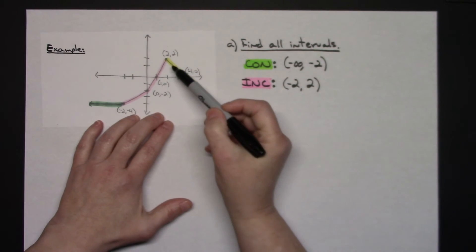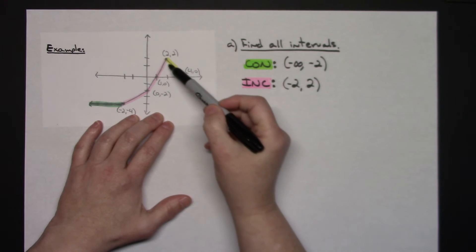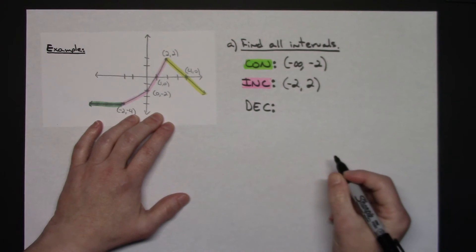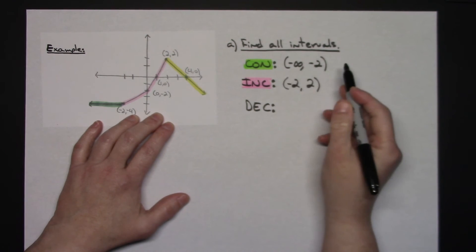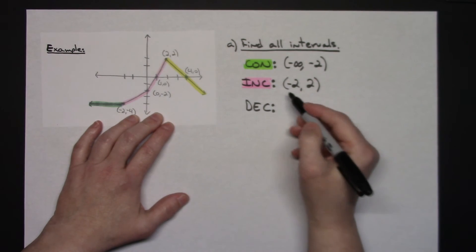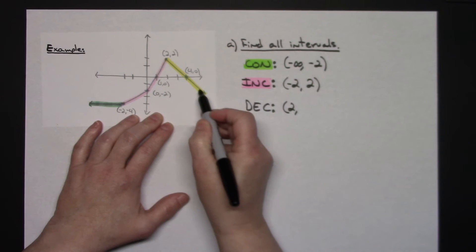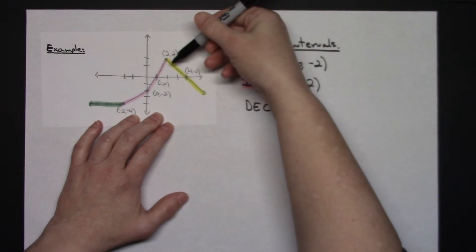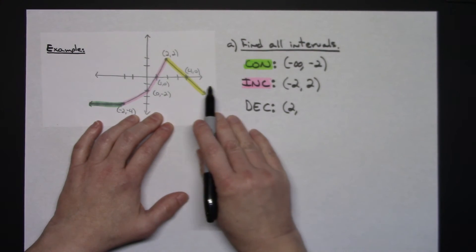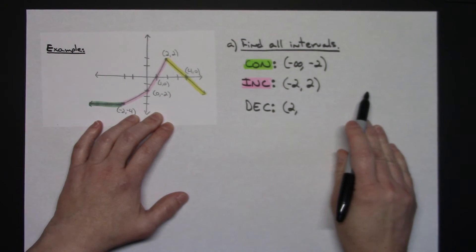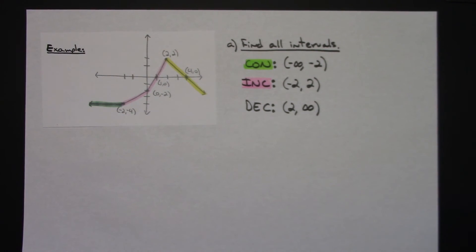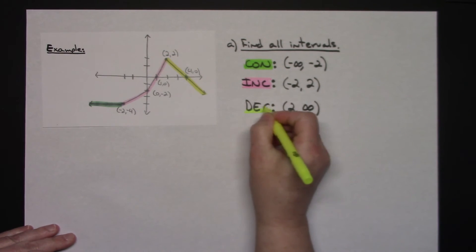The last section is decreasing because the graph is going down. Curvy brackets as always with intervals: it starts at x equals two, and since the graph continues going to the right to positive infinity, the decreasing interval is two to positive infinity. So that section of the graph is decreasing.